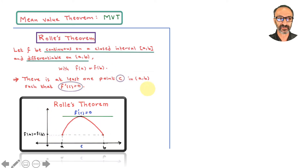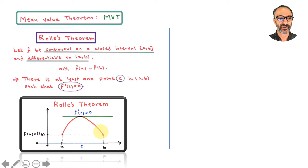Here's a graph that explains the whole thing. In Rolle's theorem, F(A) and F(B) are the same — you see the dashed line right here. If this is continuous and differentiable, that means the graph is going to go smooth. If it goes up, it has to go down because it ends at the same level. If it goes down, it has to come back up. Because F(A) equals F(B), it's a horizontal line, which means we have a horizontal tangent somewhere — at least a max and at least a min.